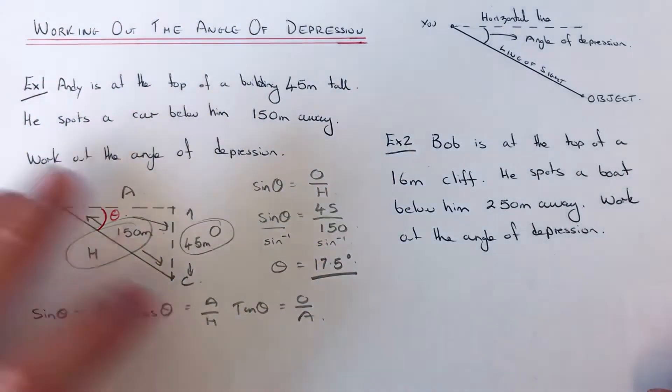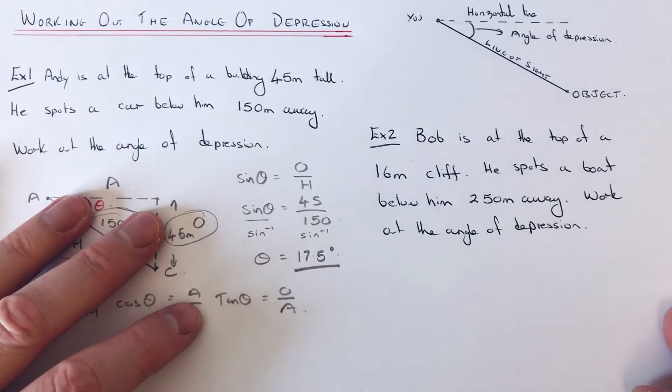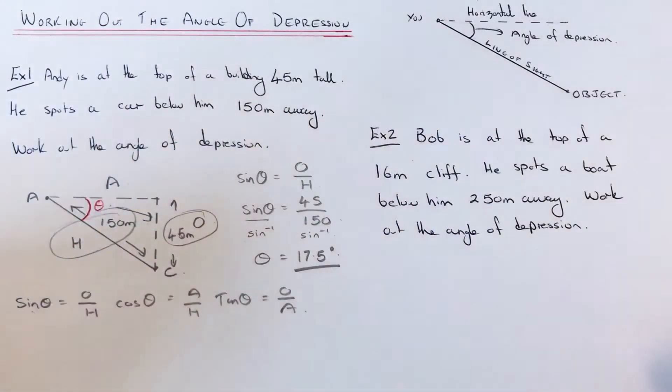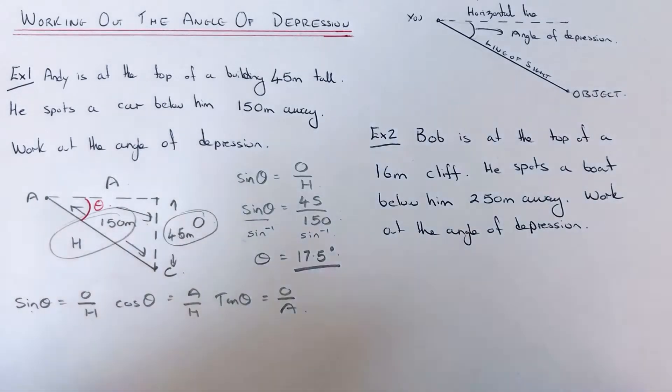So let's move on to example two. Bob is at the top of a 16 meter cliff. He spots a boat below him 250 meters away. Work out the angle of depression.